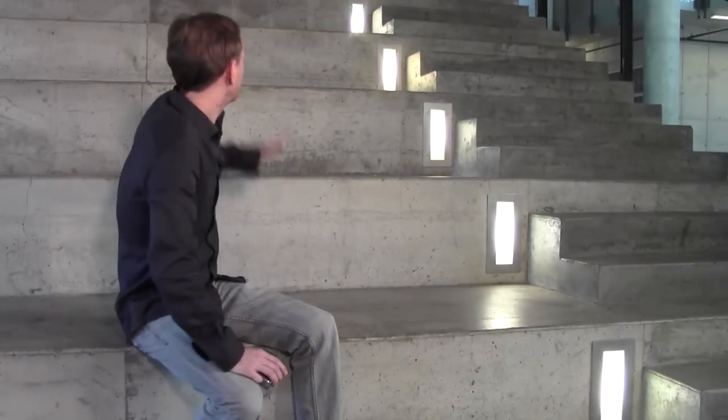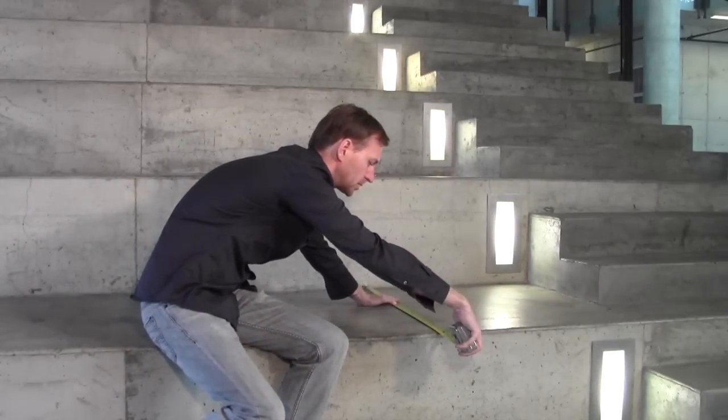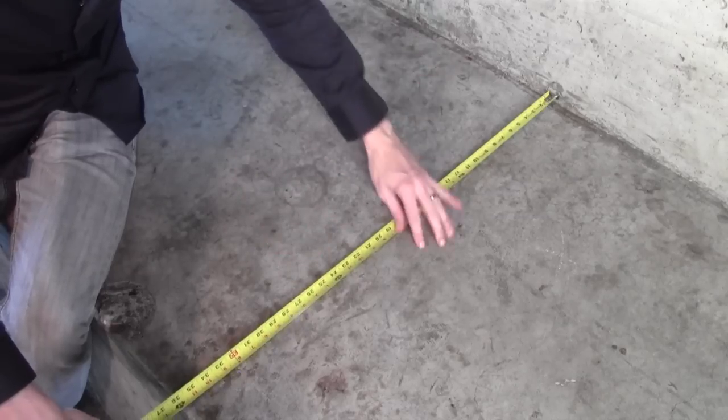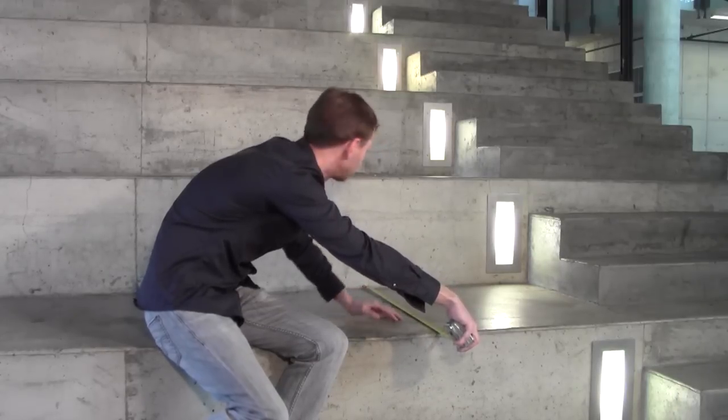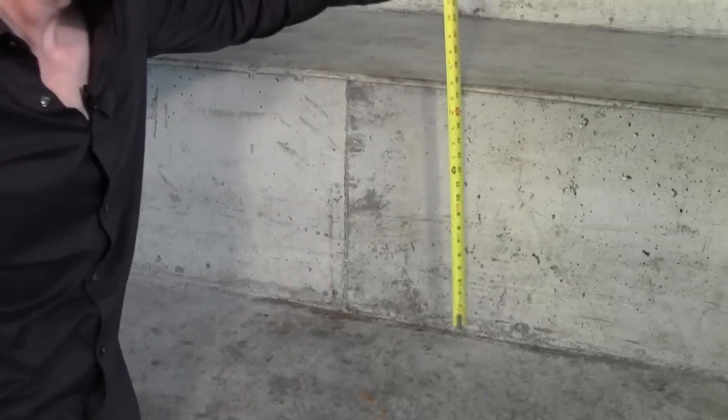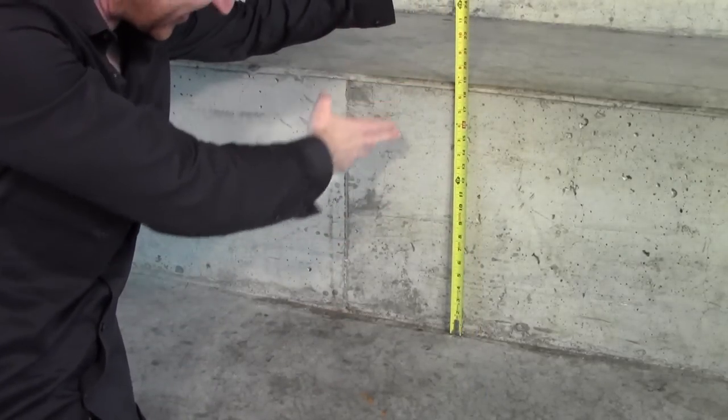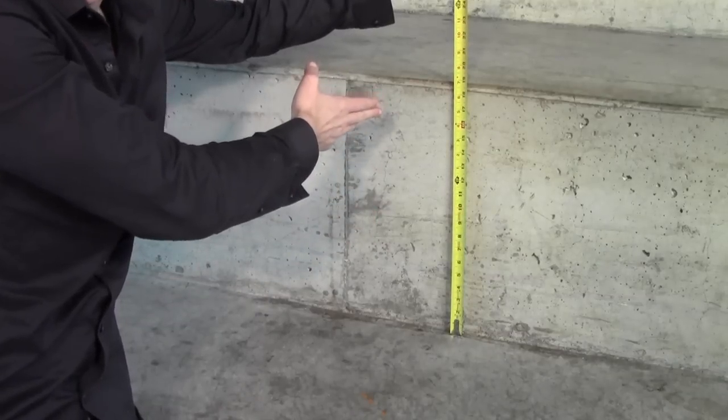On the other hand, we have this larger staircase here. Let's see what its slope is. When I measure, I get 36 inches for the width of each step. On the other hand, I find that the height of each step is about 18 3⁄4 inches.